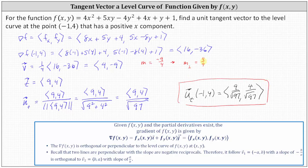One more thing to mention: if the gradient vector had a positive slope, the tangent vector would have a negative slope, and we would make the x component positive and the y component negative, so the slope is negative but the x component is positive as directed.